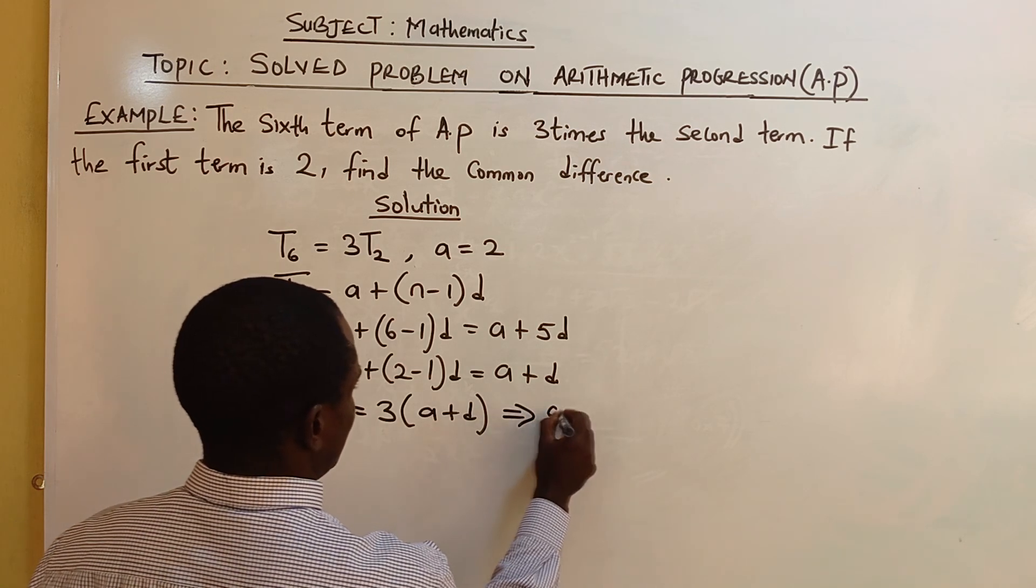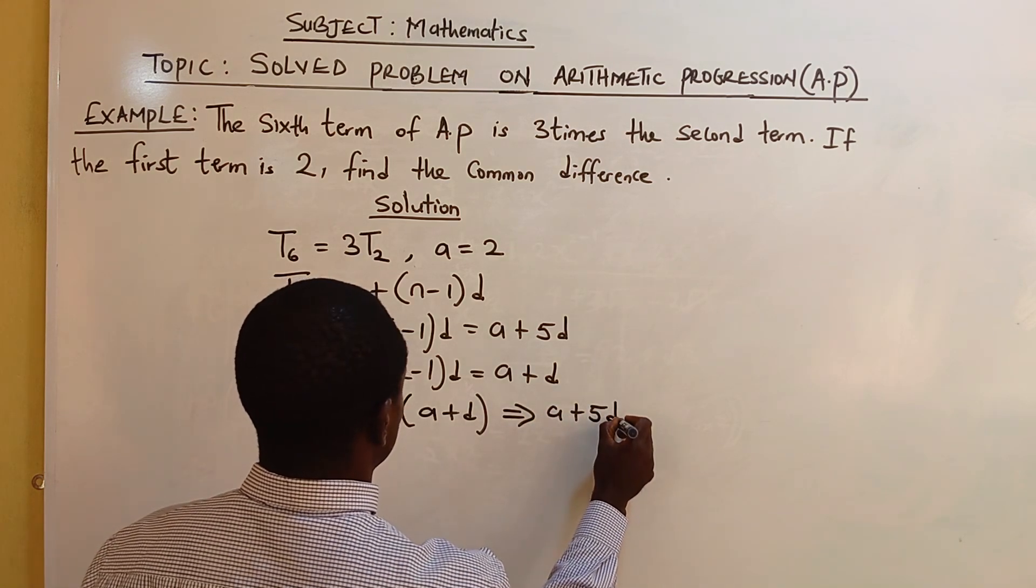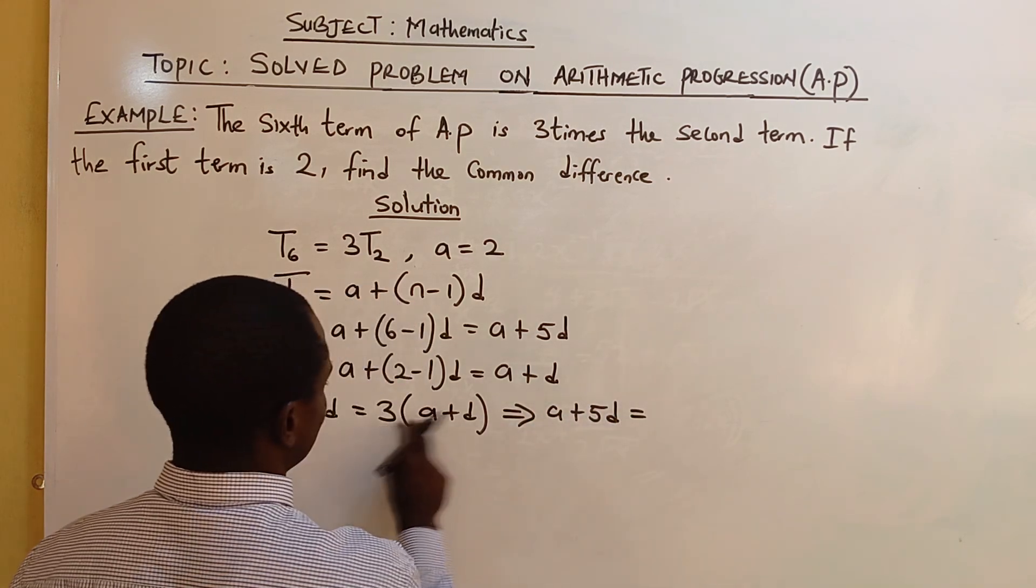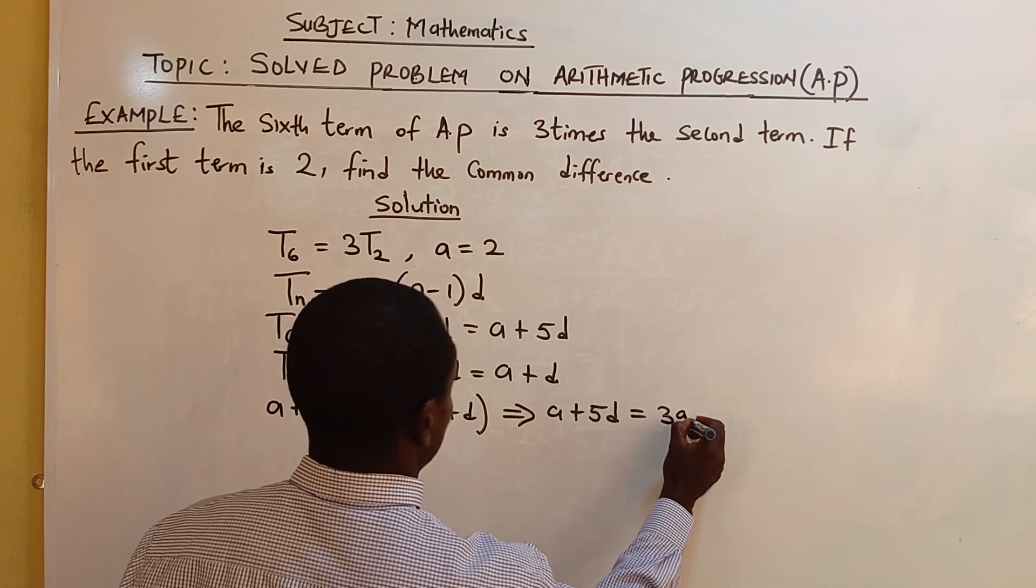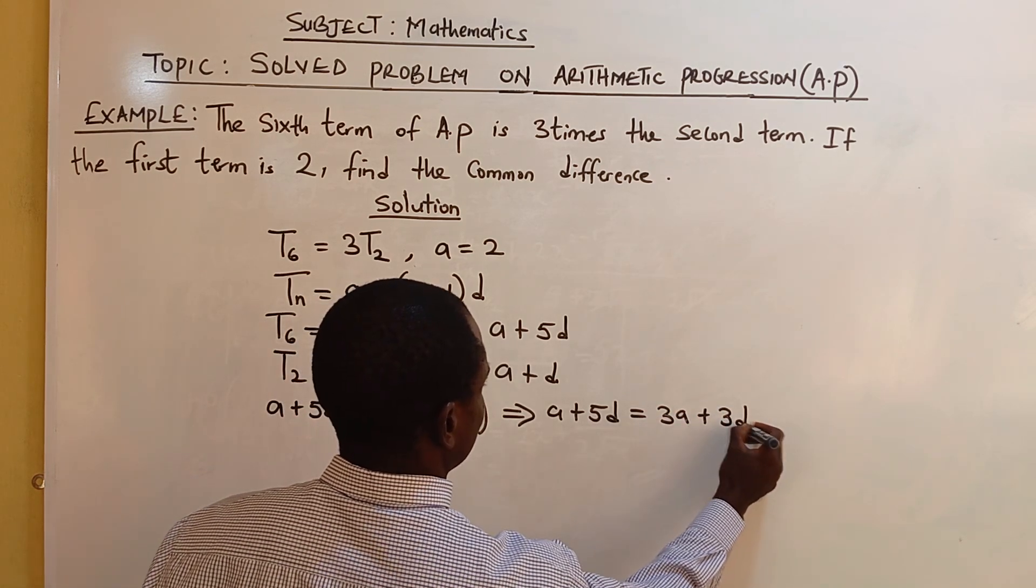Now I have A plus 5D, because let's open the bracket 3 times A, 3A plus 3D.